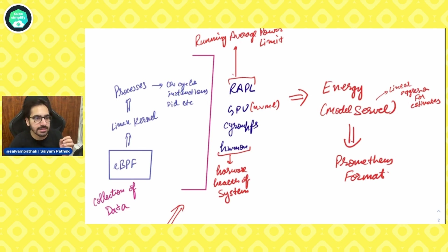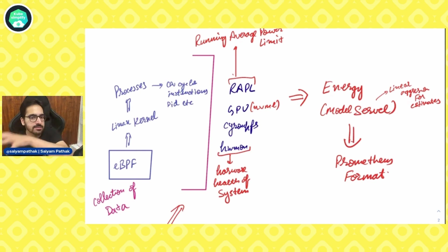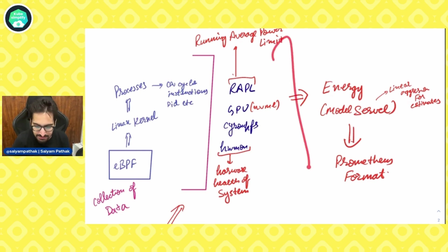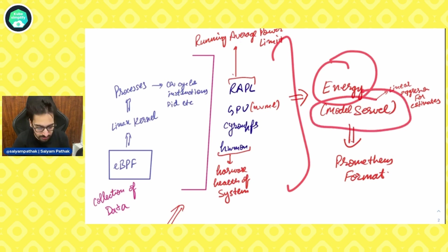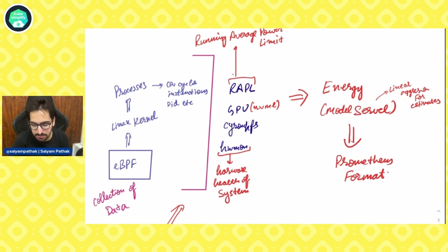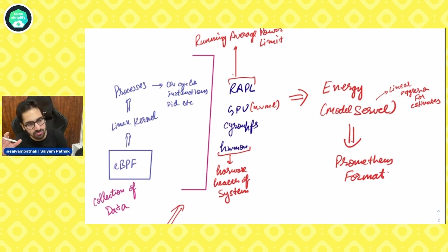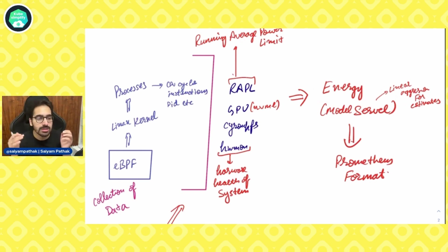You also have HWMON — hardware monitoring support — that lets you monitor the hardware health of the system, including temperature sensors, voltage sensors, and speed sensors. All the energy is calculated and then fed to the model server. Once it reaches the model server, it exposes metrics in Prometheus format, with which you can see graphs of the actual energy consumption from the pods. In short, Kepler gives you the actual energy consumption by the pods.